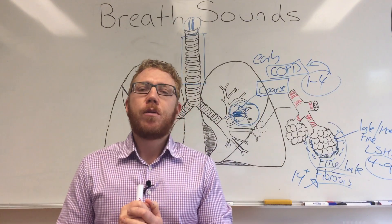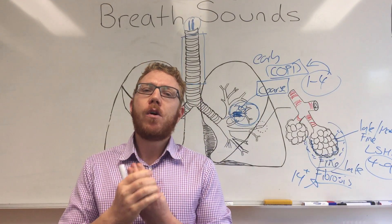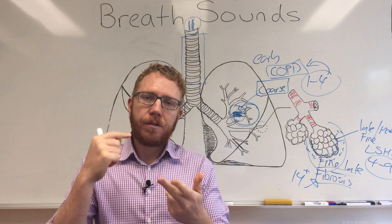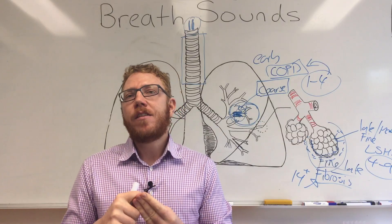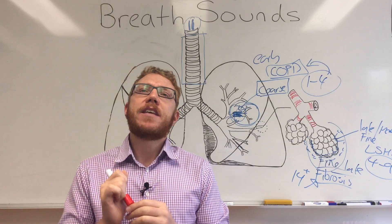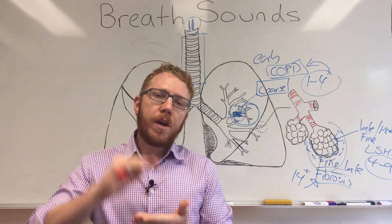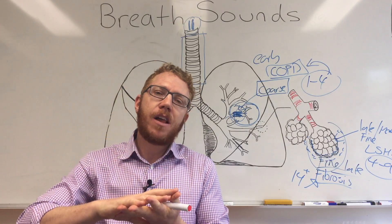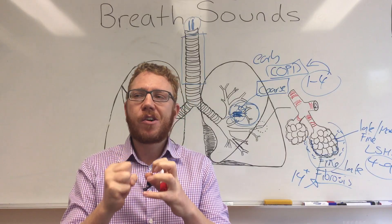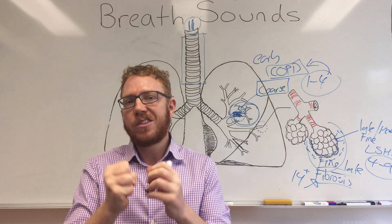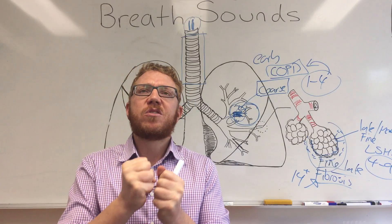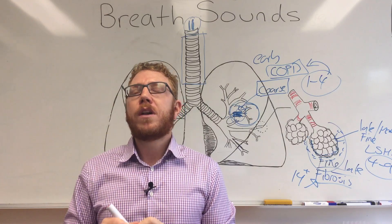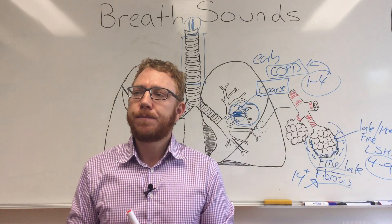The last abnormal breath sound — number four — is the pleural friction rub. This is thought to sound a bit like walking on fresh snow, where you hear that creaking, crackling, scratching sound as the snow gets pushed down into lower layers. Let's have a listen to what a friction rub would sound like.